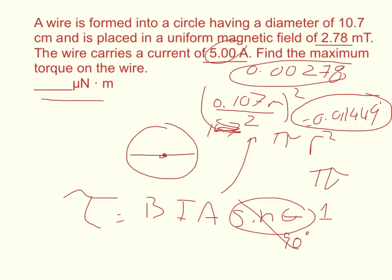So multiply all that together to get your answer. But it wants it in micro-newton meters, so take your answer and multiply it by 10 to the sixth. You should get 124.989 micro-newton meters.